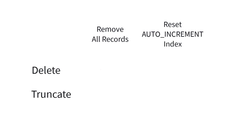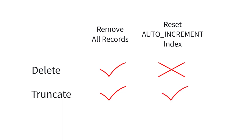DELETE and TRUNCATE both remove all the rows from a table. When we use DELETE, it simply deletes all the rows but does not reset the auto-increment index. If we use TRUNCATE, it will reset the auto-increment index.